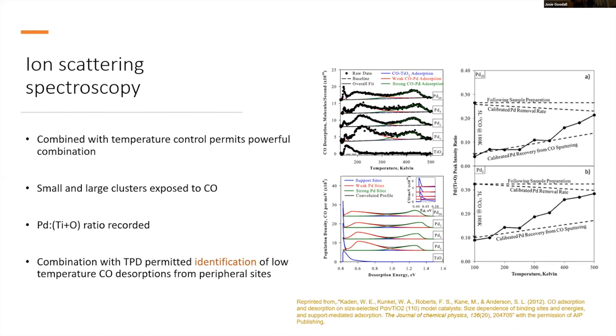What you can see from the plotted lines here, where you've got calibrated PD removal rate and calibrated PD recovery rate, is that when you do the ISS, you're going to be removing CO from surface sites. When you do the ion scattering, you're removing CO, and you're also going to be removing the palladium from the surface. So they've got reference materials, calibrated for PD removal, calibrated for CO removal, and then factored that into the measurements. Essentially what they were able to determine, based on the different temperature gradients, is that the low temperature desorptions in their TPDs were from peripheral adsorptions around the interfaces of the palladium and ceria.